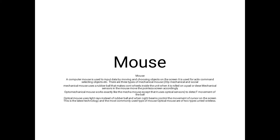A computer mouse is used to input data by moving the cursor and choosing objects on the screen. The cursor is used to select objects. Types of mouse include: first, mechanical mouse; second, opto-mechanical mouse.